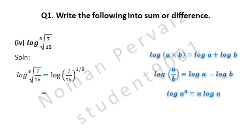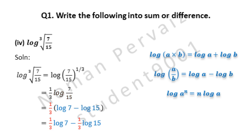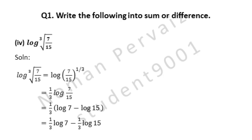Applying the third property, the power comes first: (1/3)·log(7/15). Then the second property is applied — division is converted into minus — so we get (1/3)·(log 7 − log 15). You can also see the details on the right side. 1/3 is multiplied with both terms. Hence, this is our answer.